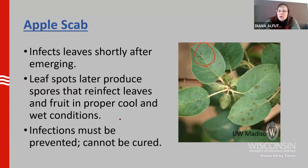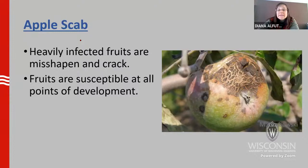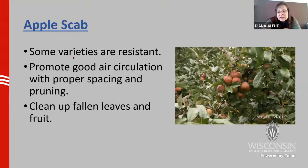With most fungi, including apple scab, infections have to be prevented — they cannot be cured. By the time you have spots on leaves, you cannot cure those spots; you have to prevent the infections in the first place. Heavily infected fruits will be really ugly — misshapen, cracked, and rotting — and they'll fall to the ground. Fruits are susceptible throughout the year, so infections can occur throughout the growing season if conditions are right. Some varieties have resistance. For management, you want good spacing and good pruning so the canopy dries off quickly. Also clean up fallen leaves and fruit in the fall to reduce inoculum for the next year.